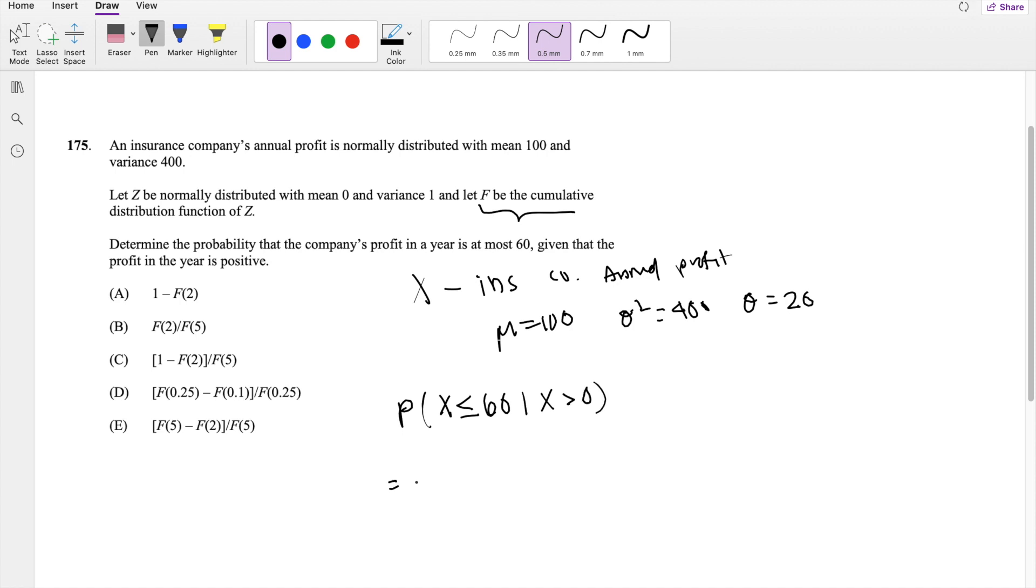So again, by the conditional probability formula, this could be broken down into the probability of X between 0 and 60, divided by the probability that X is greater than 0.